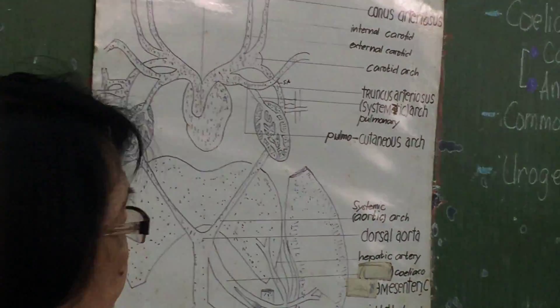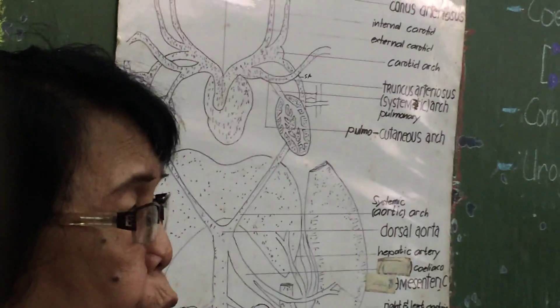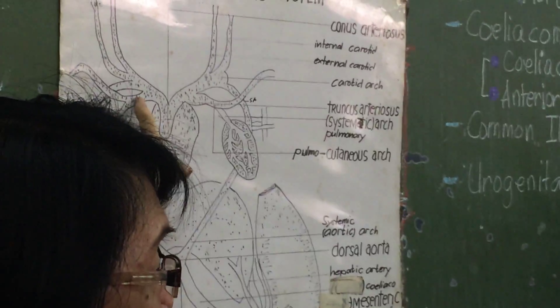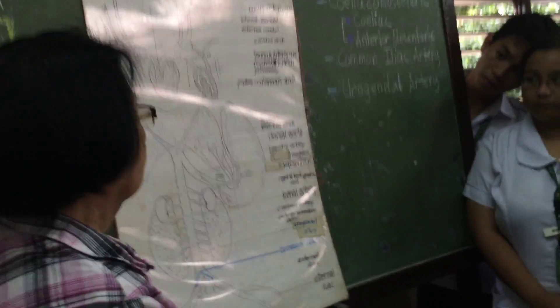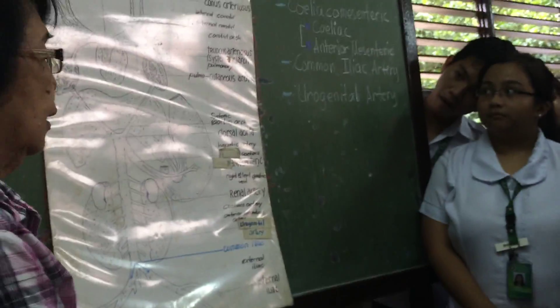The conus arteriosus usually branches into two, so you have one going to the left side of the heart and the other one going to the right side. Now both are conus arteriosus. If you study one of the conus arteriosus, there are three branches or three tributaries that you can see.